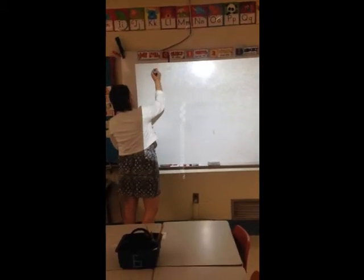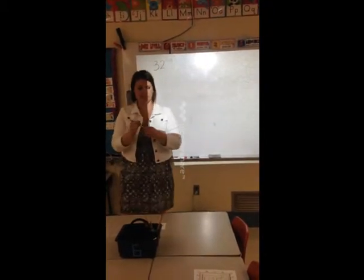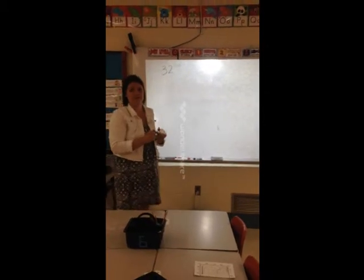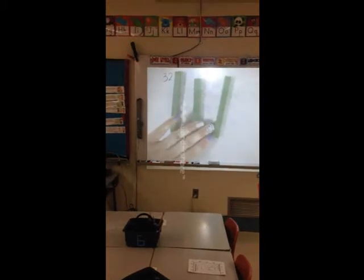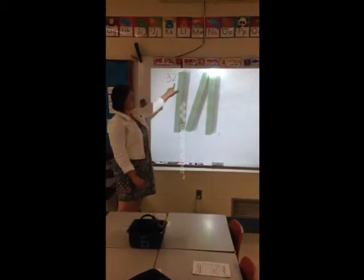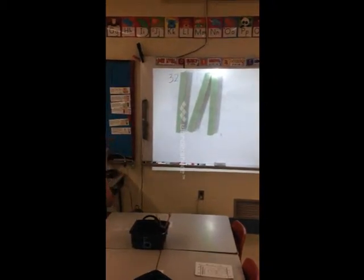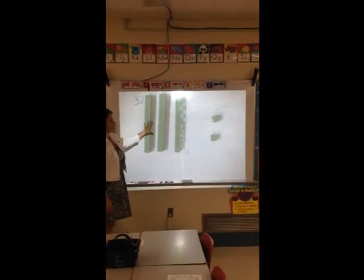Let's model the number thirty-two. How many ten sticks do I need to model the number thirty-two? Three. So I'm going to lay out three ten sticks: ten, twenty, thirty. How many ones do we need to lay out to make thirty-two? Just two. Very good. So what's the value of my tens? Thirty.